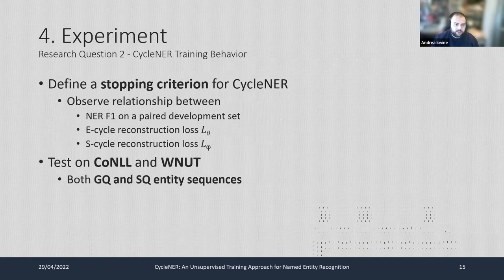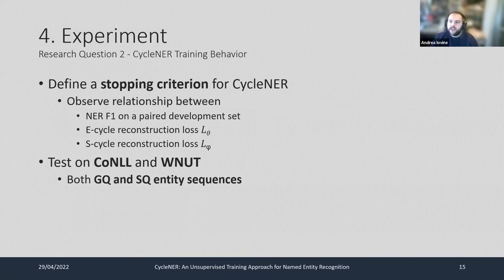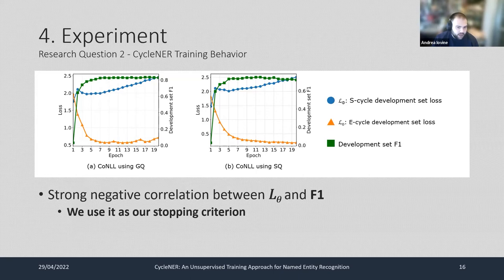In the second part of the experiment, we defined a stopping criterion for Cycle NER that allows us to stop training without resorting to an annotated development set. We measured the relationship between NER F1 on a paired development set, the E-cycle reconstruction loss on entity sequences, and the S-cycle reconstruction loss on sentences. We found a strong negative correlation between the E-cycle reconstruction loss and NER F1 — as the loss decreases, NER performance increases. We therefore use the E-cycle development set loss as the stopping criterion.